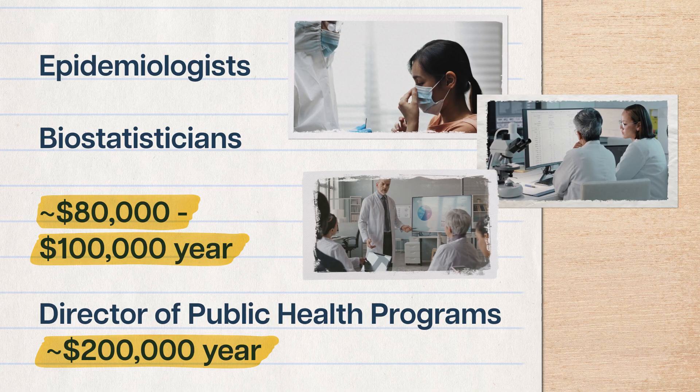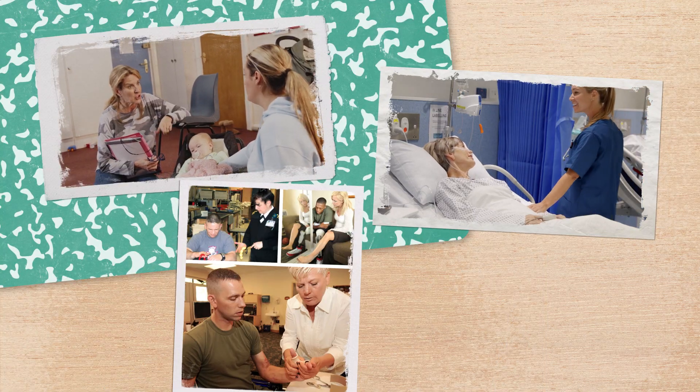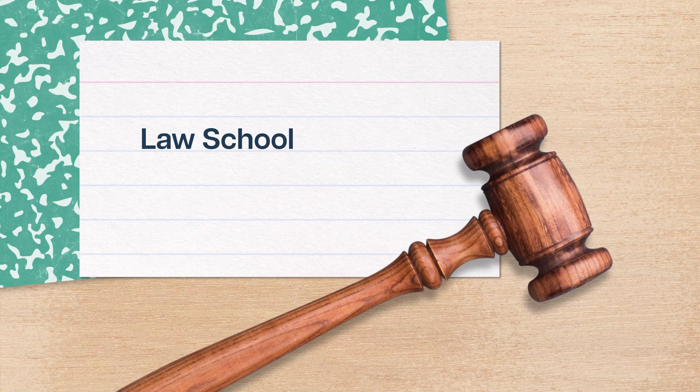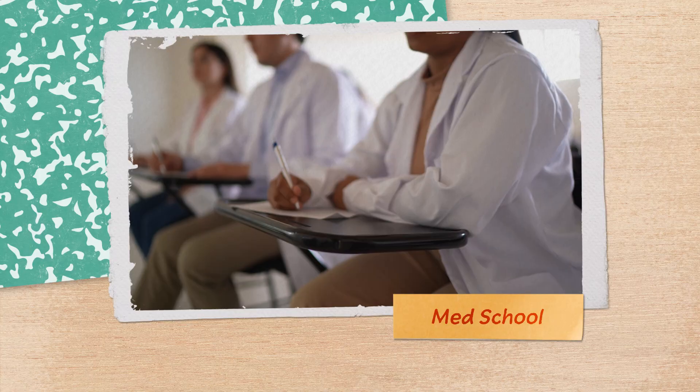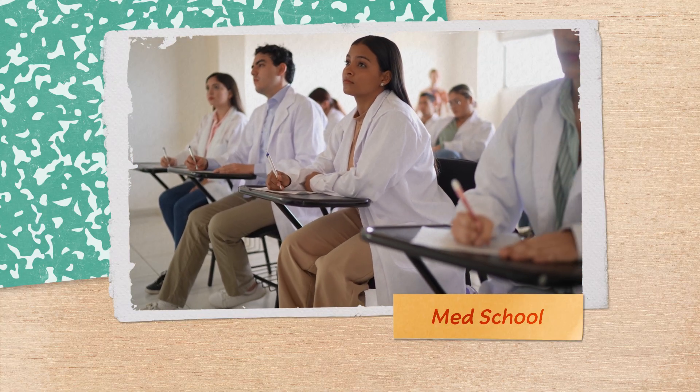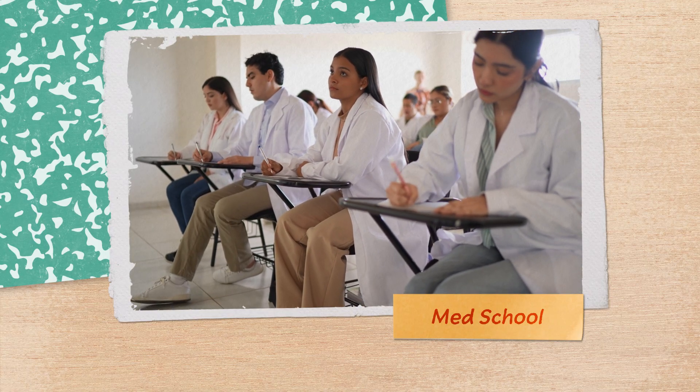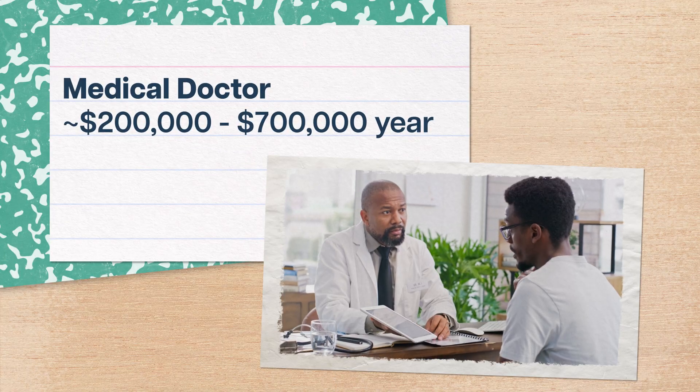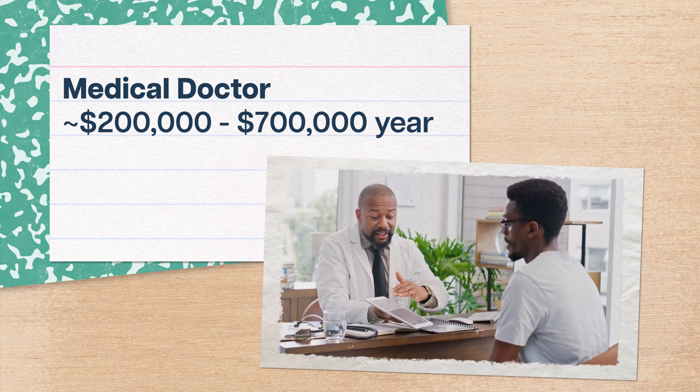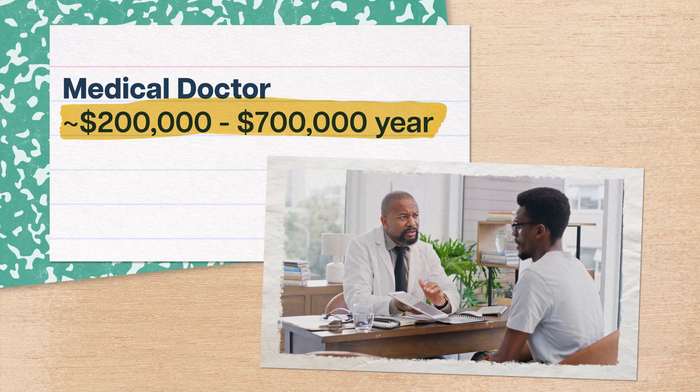You could also get your grad degree in something else related to public health, like social work, nursing, or occupational therapy. Or, if you love crafting policy and fighting for the underdog, you could go to law school and do it from the courtroom. And also, if you've got cowpox vaccine dreams like Dr. Jenner, you could go to med school. Public health isn't one of the most common pre-med majors, since it focuses so much more on large-scale systems than individual patients. But it definitely sets you up with lots of the social and scientific skills that will help you succeed. And, of course, doctors make bank, anywhere from $200,000 to upwards of $700,000.